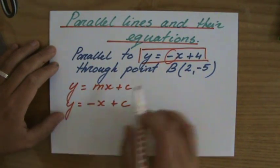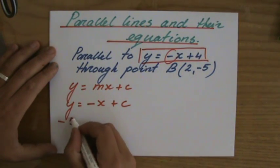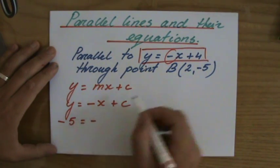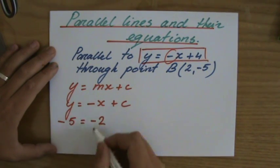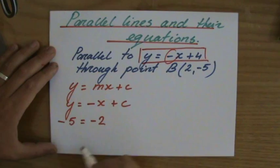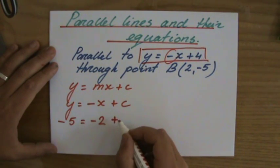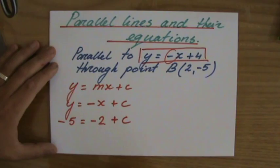So what is y? y now is minus 5. And that equals minus x, so minus 2. Be careful with those signs - that's minus x, minus 2, because x is 2, plus c.